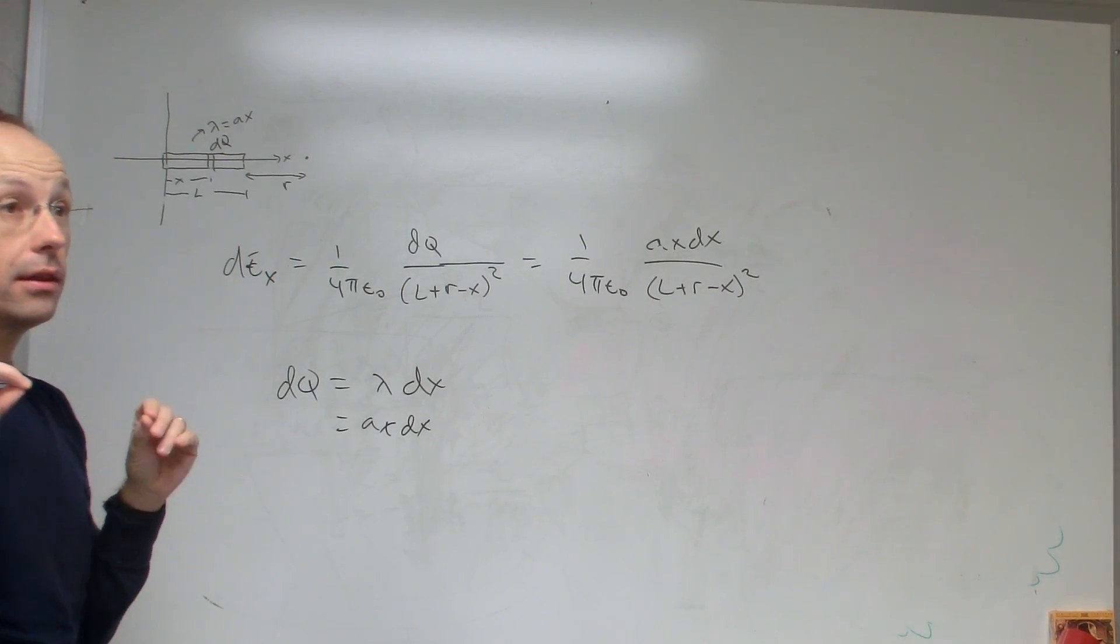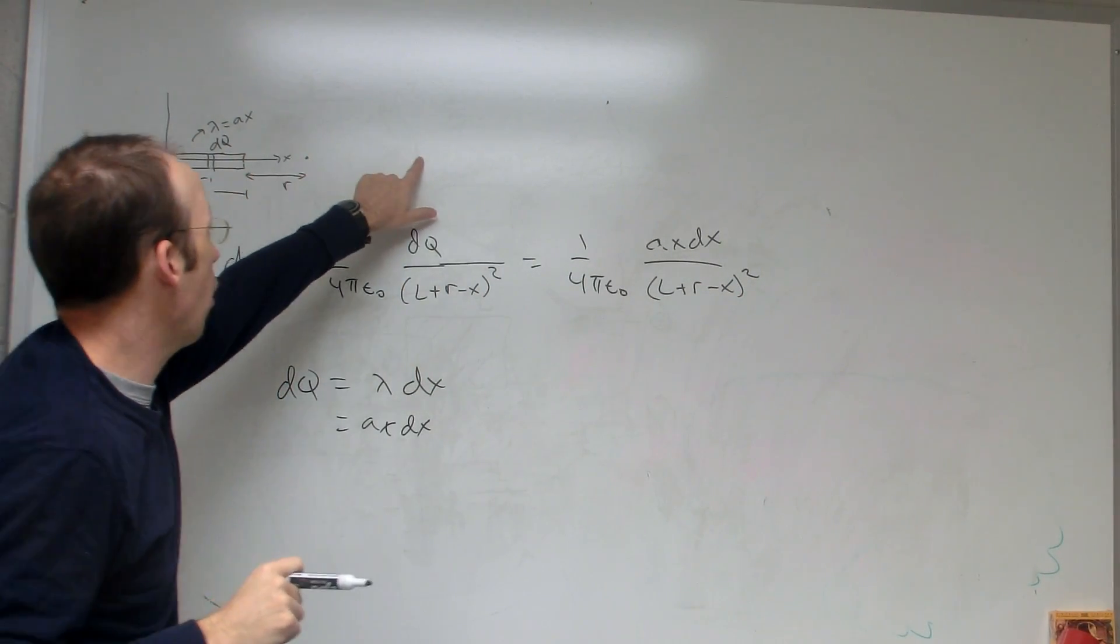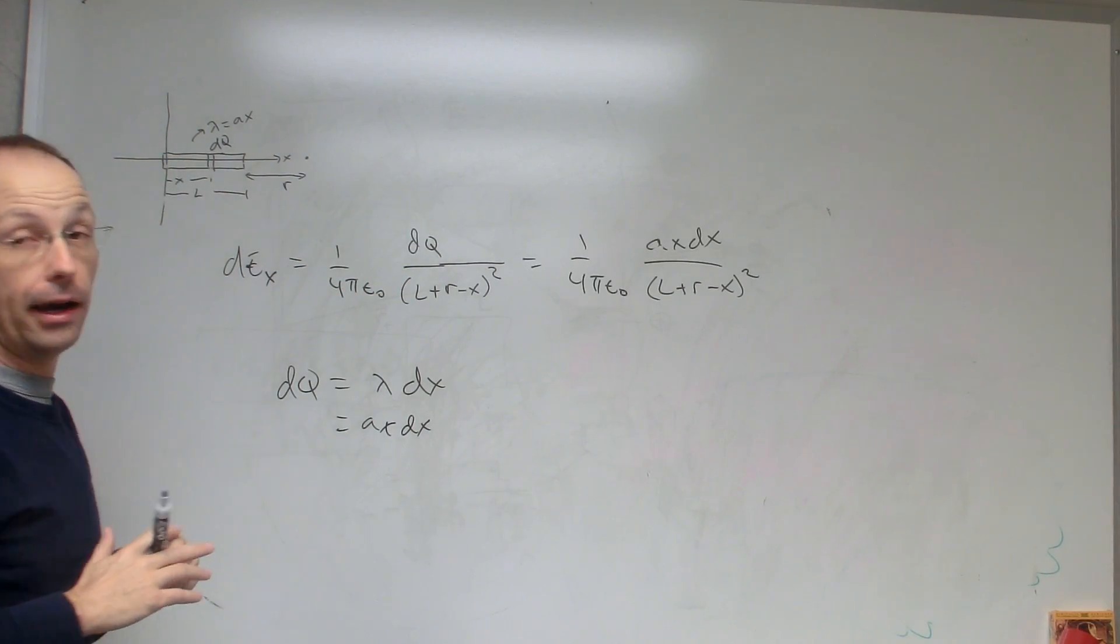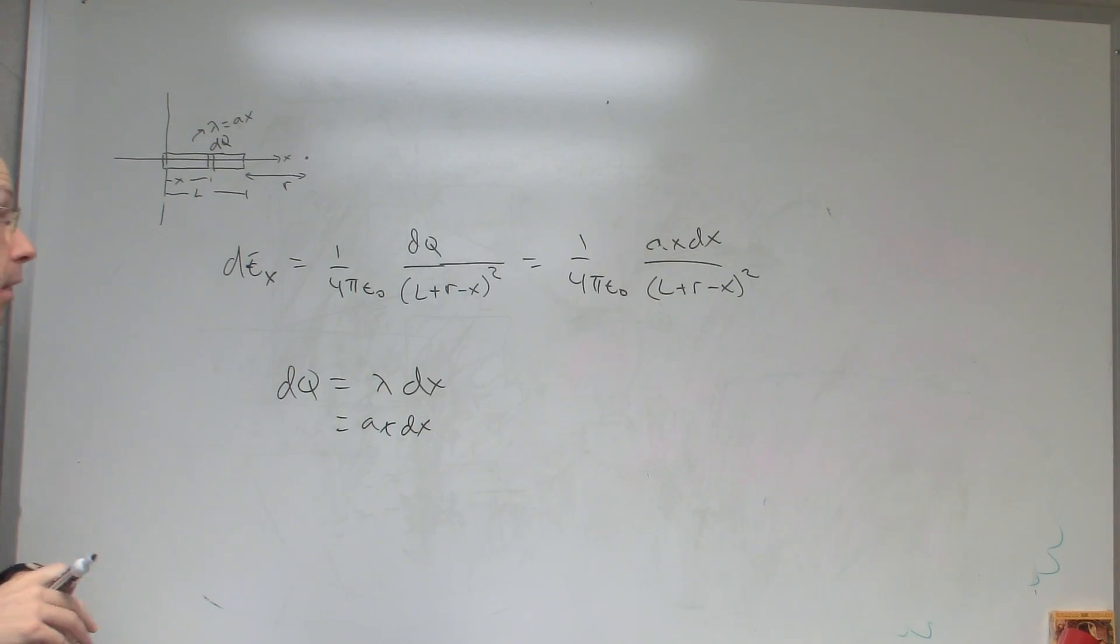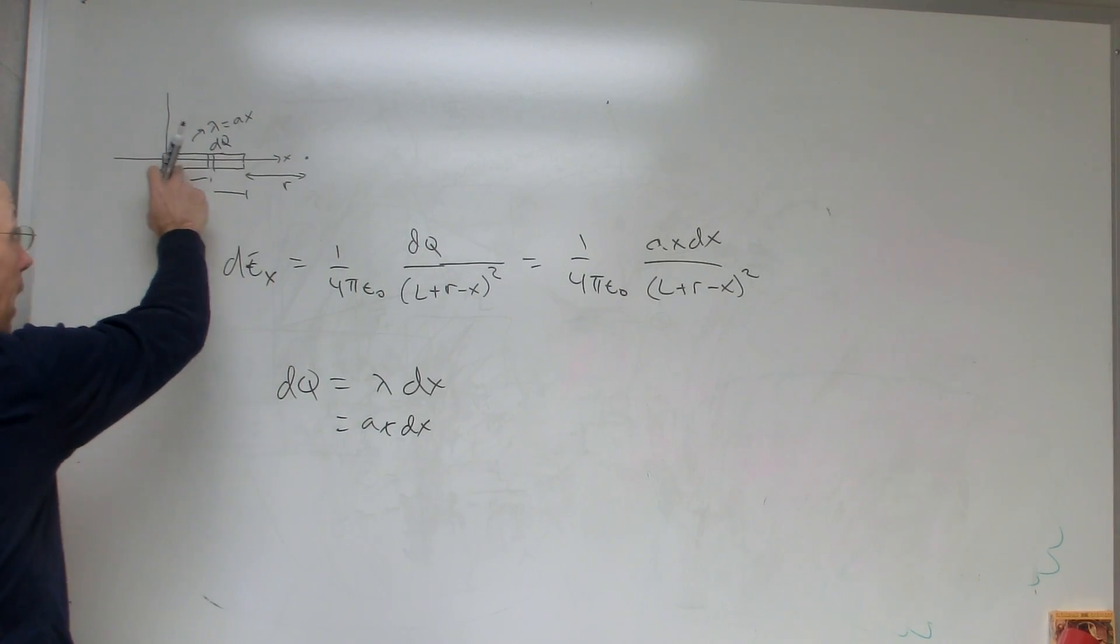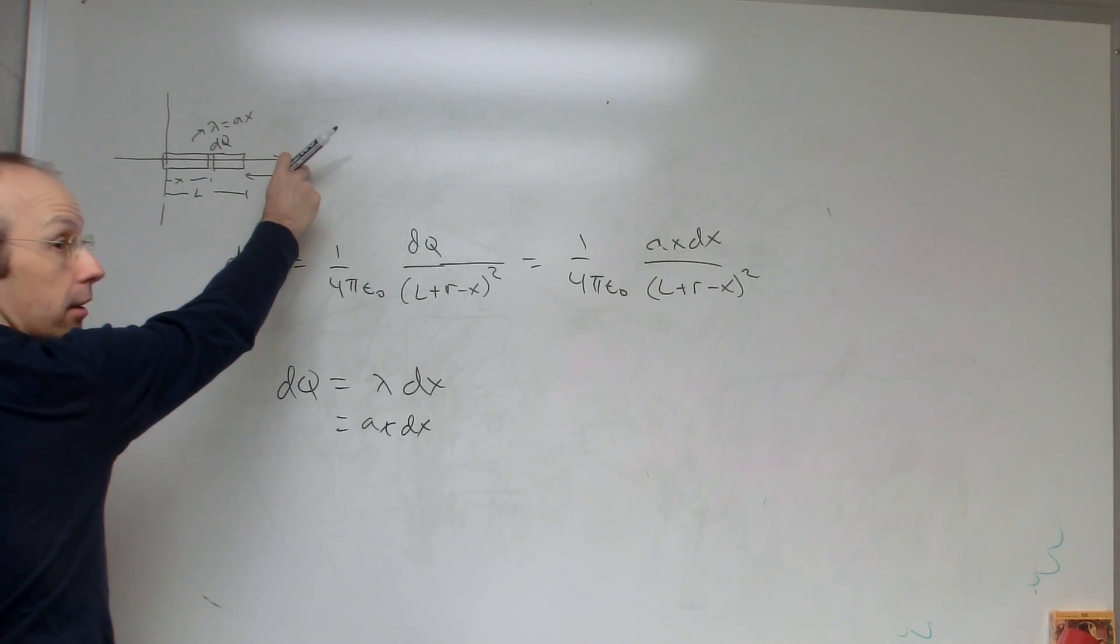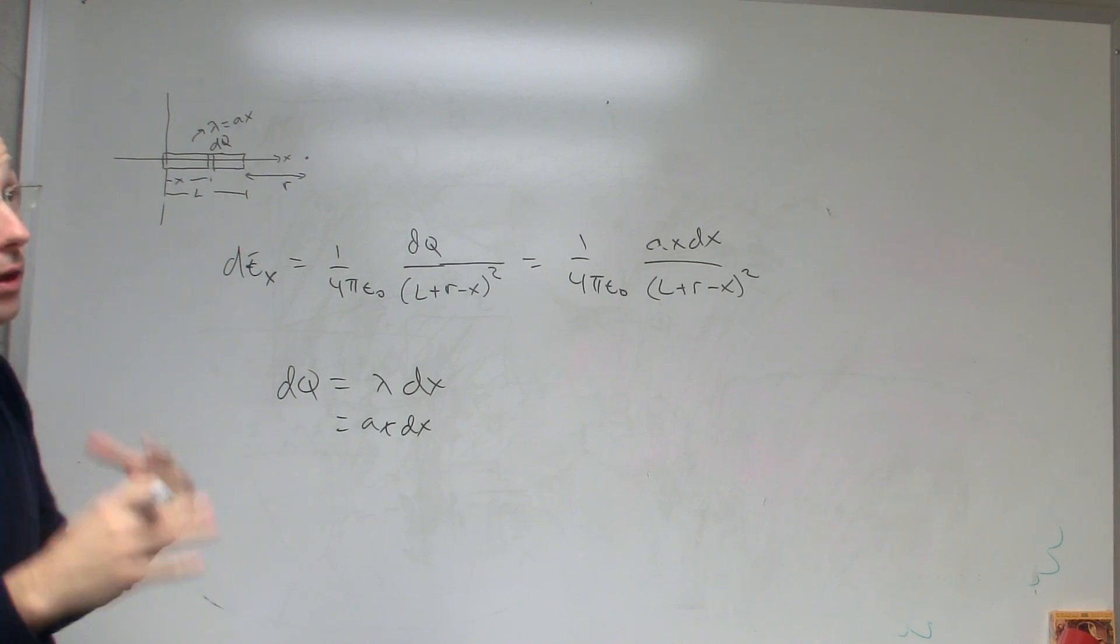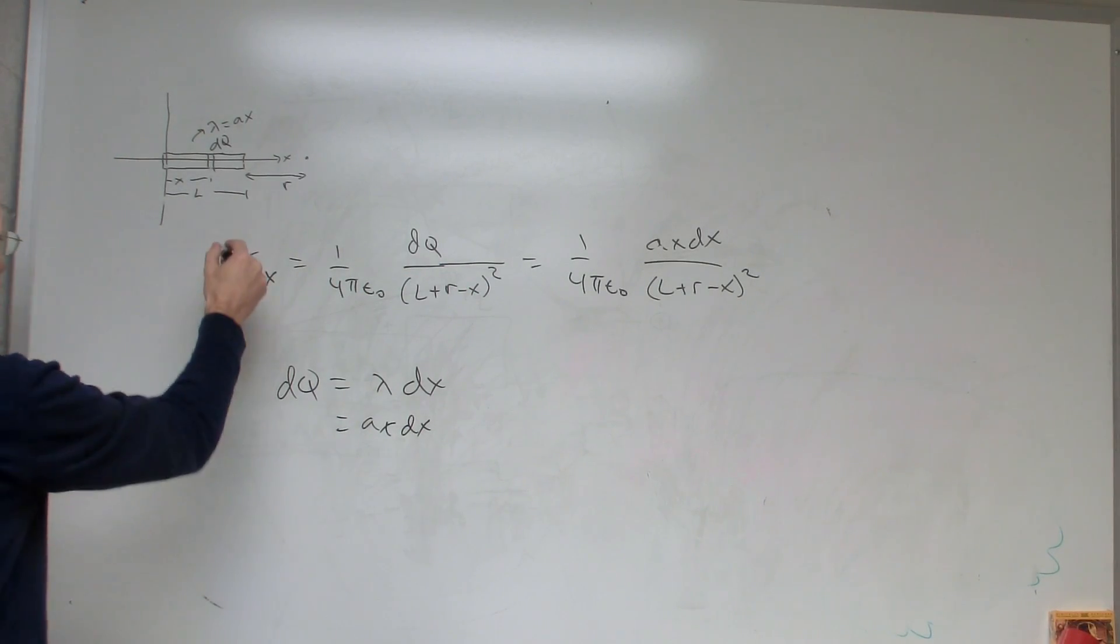They're both things that can change. I can move r further away, and x is the location of this element inside of here. In this case when I integrate, r is a constant. I'm not changing r as I add up these pieces. I'm trying to find out the expression at r, so that's not going to be in my integration. It's a constant in terms of my integration, whereas x is not.